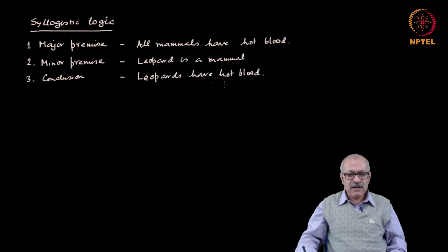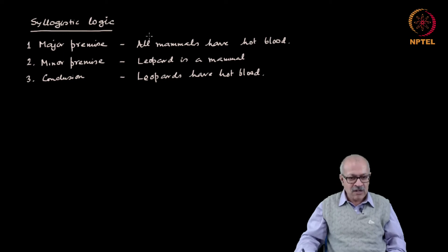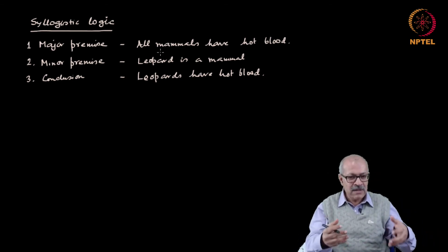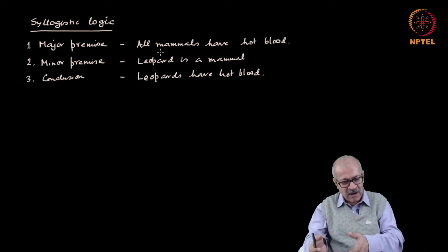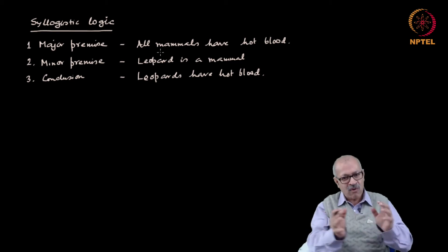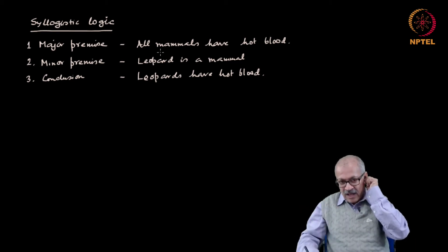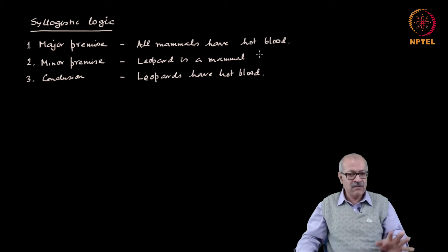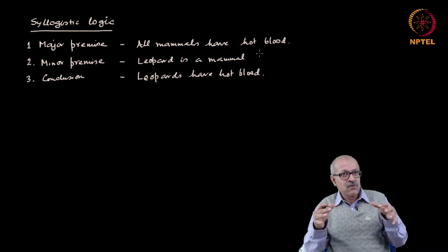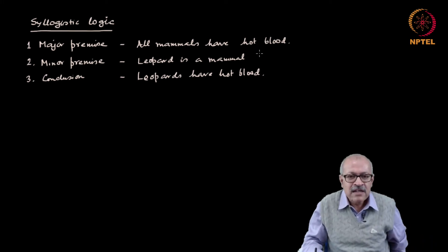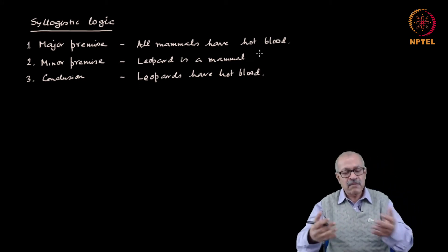Even without testing whether all leopards have hot blood or not, you can arrive at that conclusion because the general statement 'all mammals have hot blood' is true. How did you arrive at that general conclusion? By applying inductive logic — scientists examined various mammals, found hot blood in all cases, and therefore concluded that all mammals have hot blood. Notice that in any application of deductive logic, such a prior inductive inference is necessary. That is why, of these two lines of logic, inductive is said to be prior.